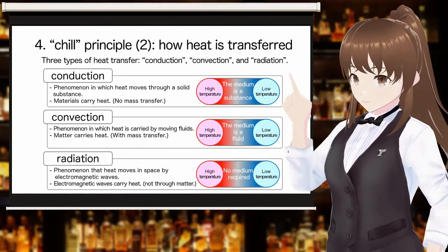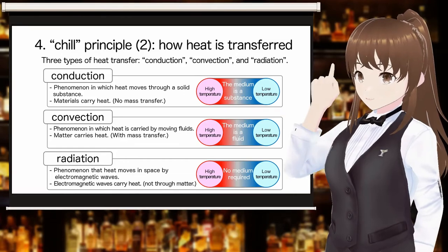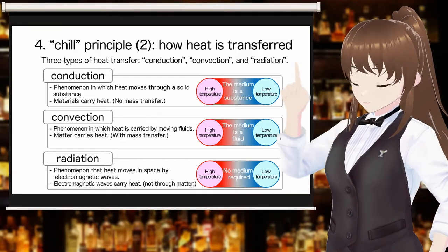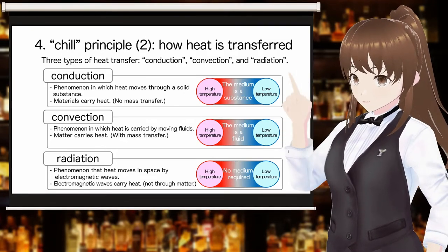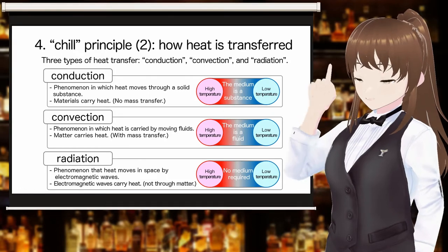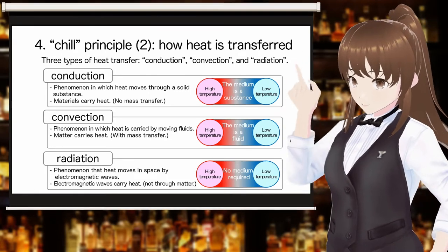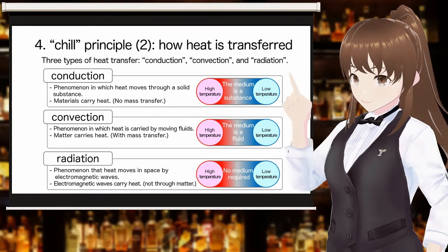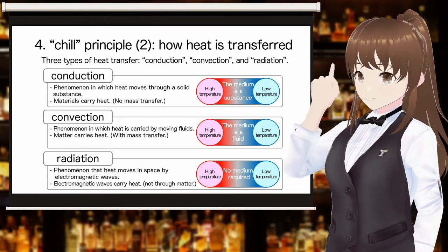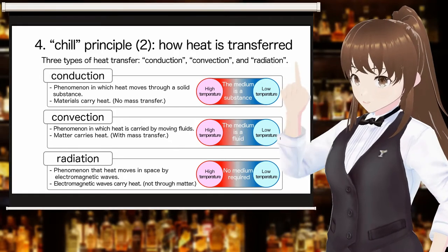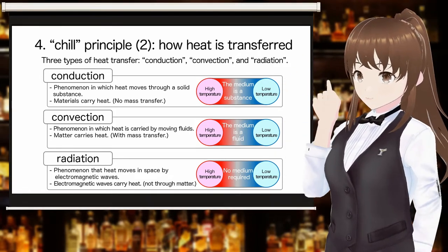There are three types of heat transfer: conduction, convection, and radiation. Conduction and convection are the ways in which heat is transferred by matter, and radiation is the way in which heat is transferred by electromagnetic waves that do not involve matter.